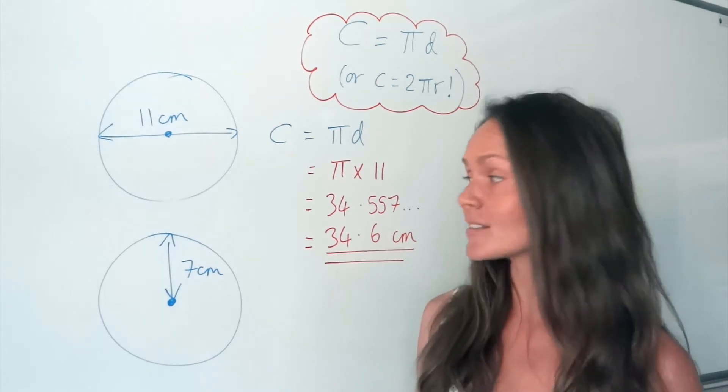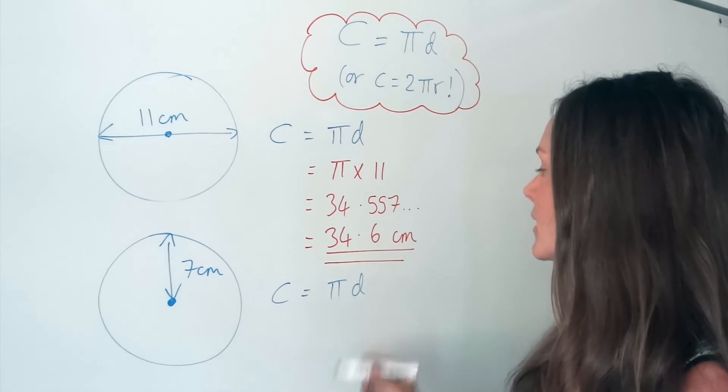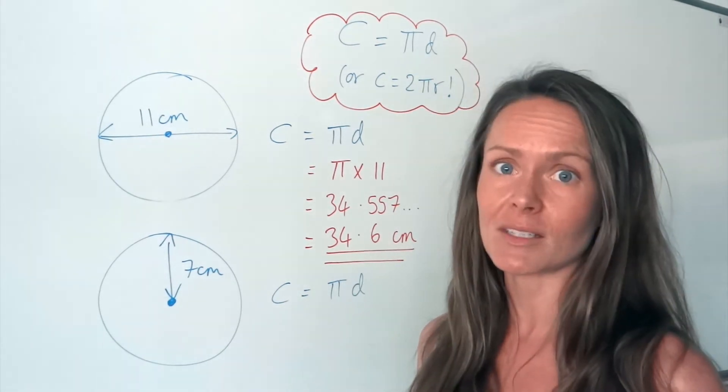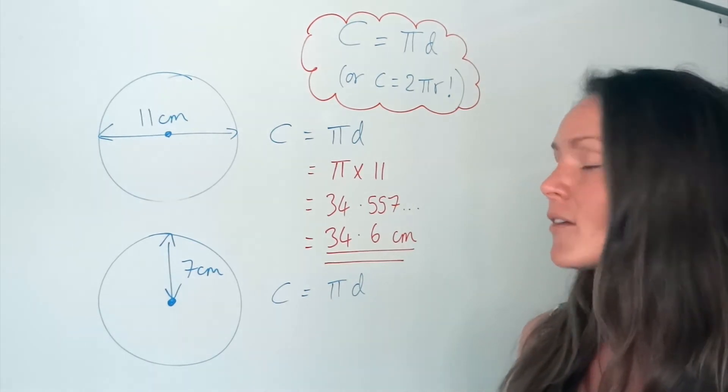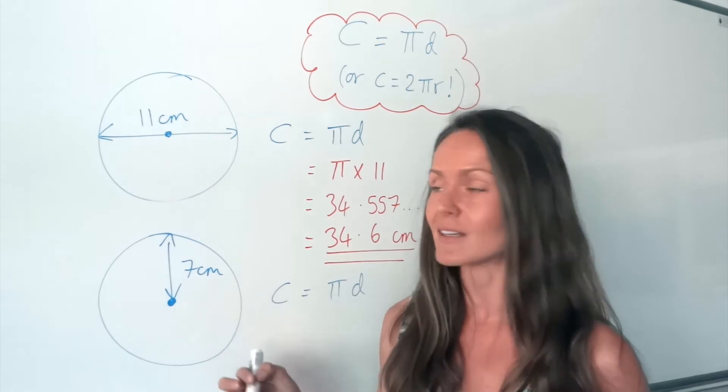Now, in the next example, start the same way. Write down your equation, c equals pi d. Now, looking at this example, it's a little bit different, because we haven't been given the diameter in this question. We've been given something called the radius.